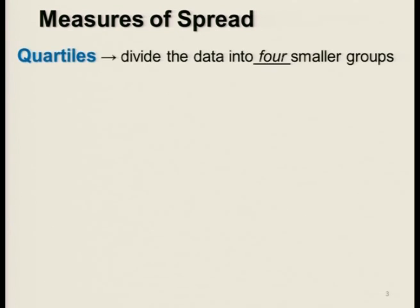Another way of looking at how data are spread is to look at what we call quartiles. What the quartiles do is divide the data set into four smaller groups. Remember, the median divided the data into two smaller groups.